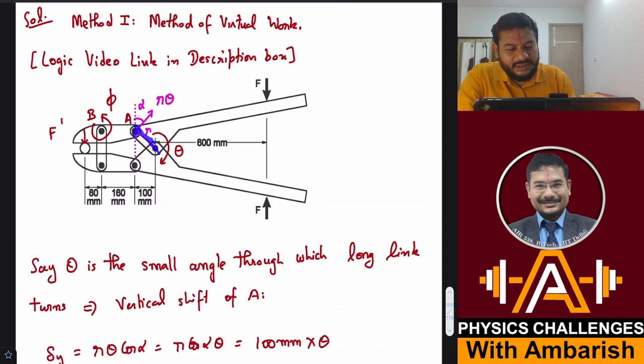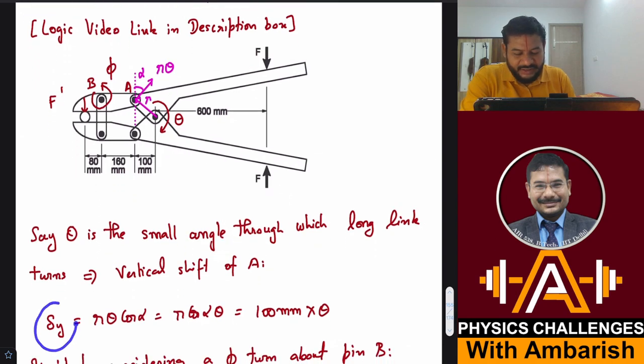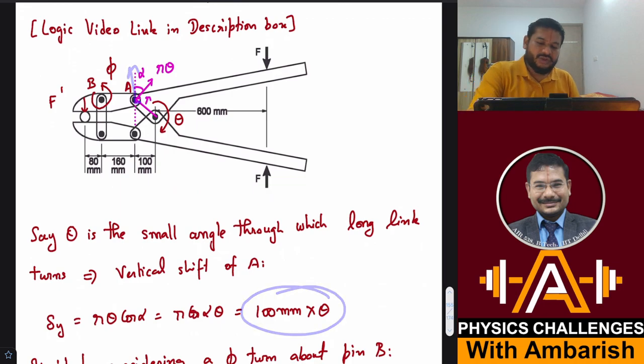Let us say this radius is R. So this joint A or pin A moves by a distance R theta in an inclined direction, and the angle with the vertical is alpha. Its vertical displacement is R theta times cos alpha. Theta is the small angle through which the long link turns. The vertical shift of A, delta Y, is R theta cos alpha, which equals R cos alpha times theta. R cos alpha is this 100 mm, the projection of R on the horizontal axis, so it becomes 100 mm times theta, the vertical shift of joint A.